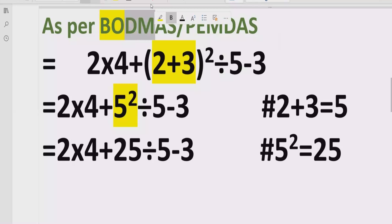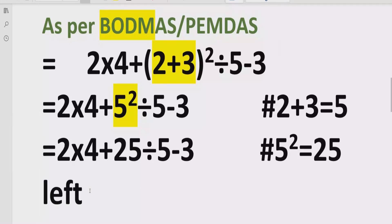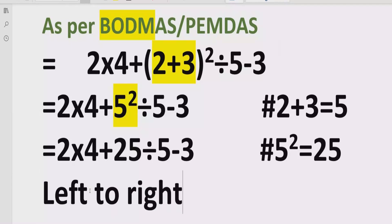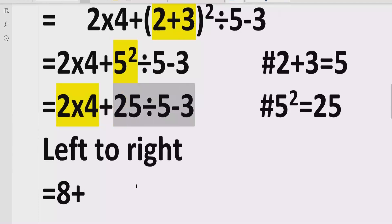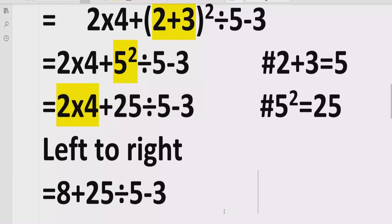Now we will solve the division and multiplication. Going left to right in our expression, we find the first operation is 2 multiplied by 4, which is equal to 8. We solve this one and write the other parts as they are. So 2 multiplied by 4 equals 8.